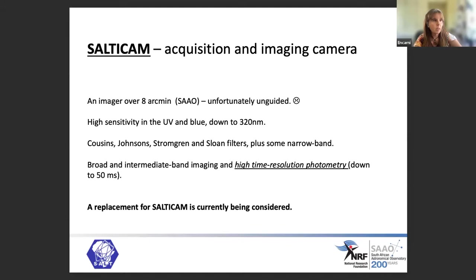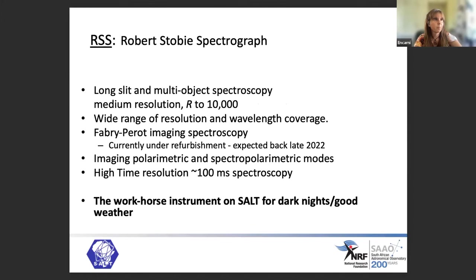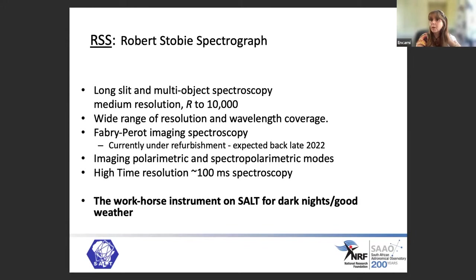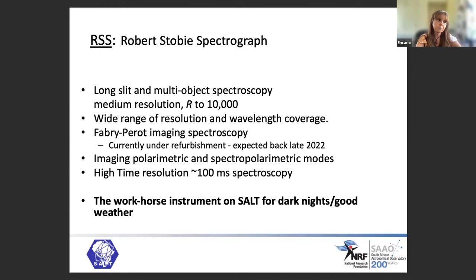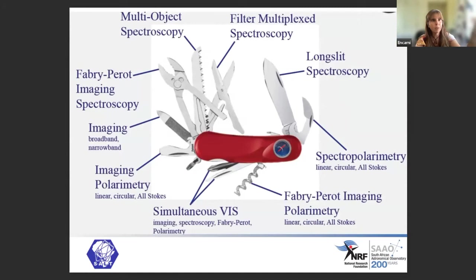SALTICAM is an aging instrument and observations are currently unguided; we are looking for a replacement still being considered. The RSS — the Robert Stobie Spectrograph — is the main workhorse for dark nights and good weather. It's a long-slit and multi-object spectrograph with a median resolution up to R~10,000 depending on wavelength range and grating. It also has Fabry-Pérot imaging spectroscopy — currently not available but being refurbished — plus polarimetric and spectropolarimetric modes, high time resolution of about 100 milliseconds spectroscopy and 50 milliseconds photometry.